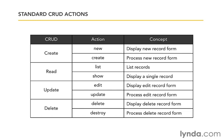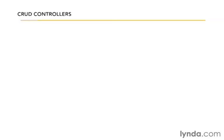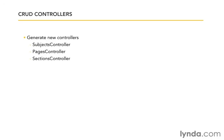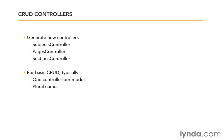I want to give you a couple of tips about controllers before we get started. I'm going to be demonstrating how to add the CRUD for subjects, but I'd like you to also try adding the same CRUD for pages and sections on your own. I'll create the subjects controller, then it'll be up to you to create the pages and sections controllers. You'll also notice that we've broken up the CRUD into separate controllers — typically one controller per model — and we use plural names, so subjects controller, not subject controller. That lets us know we're controlling all of the subjects in the database.